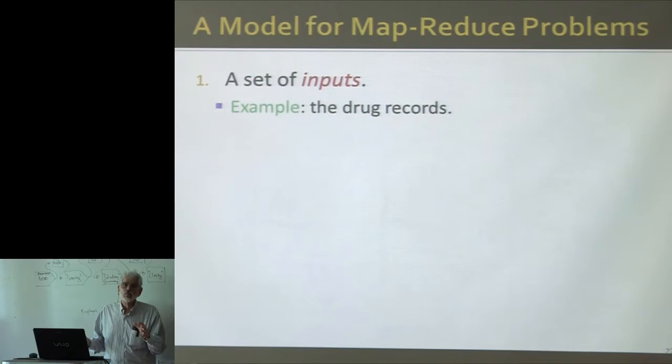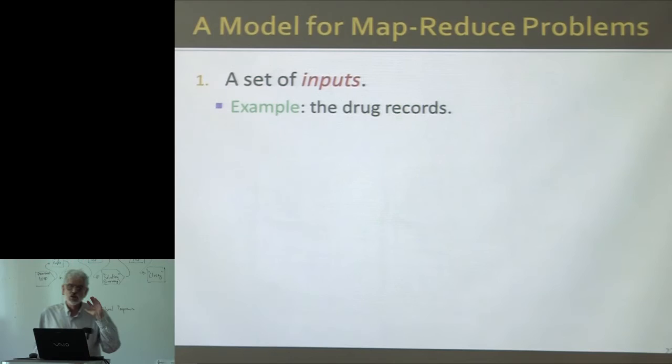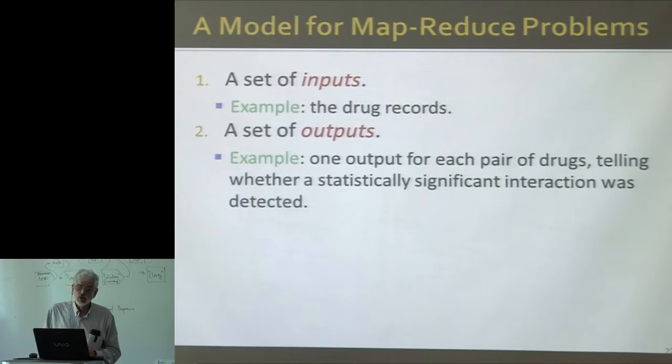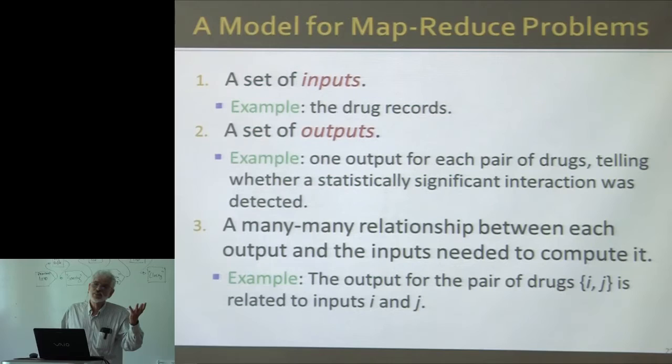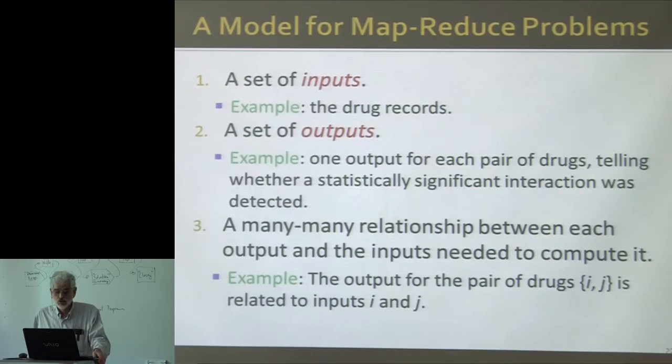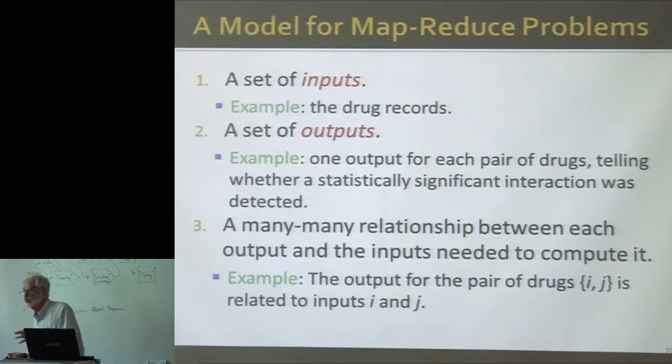We have a notion of a problem and a notion of an algorithm. The algorithm is what we call the mapping schema. A problem is simply a set of inputs — say the drug records — a set of outputs — in this case a number for every pair of drugs, the chi-squared value — and a many-to-many relationship between inputs and outputs, where each output is related to exactly those inputs necessary to compute it. The thing about a MapReduce algorithm is: all the inputs for an output have to go to some one reducer.